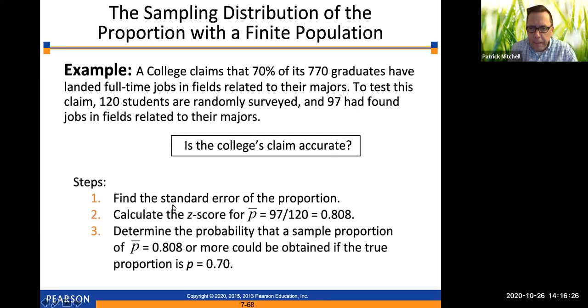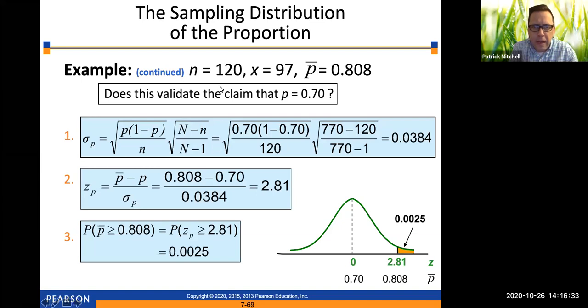All right. So the steps are very similar to the last problem, except in this case, because the sample size is 120 and the population size is 770, the sample size is well over 5% of the population size. So we will do the finite population correction. So sigma sub p is the square root of p times 1 minus p over n, which you see over here, times the square root of big N minus little n over big N minus 1. This is definitely another one that you should try on your calculator. Just verify that you're able to get 0.0384.